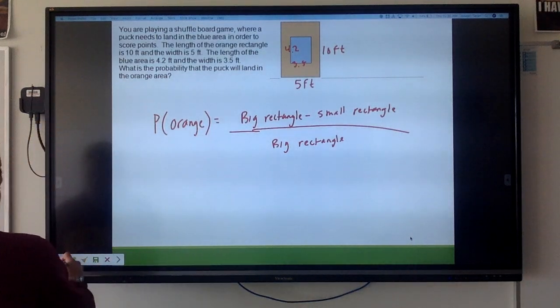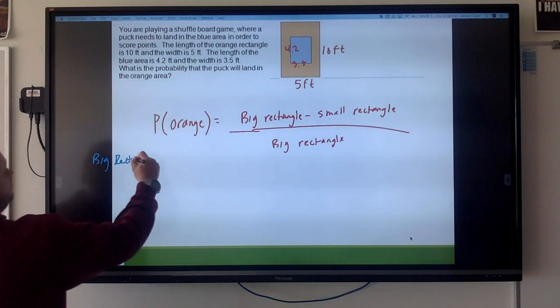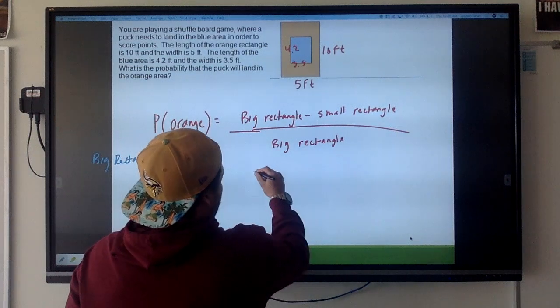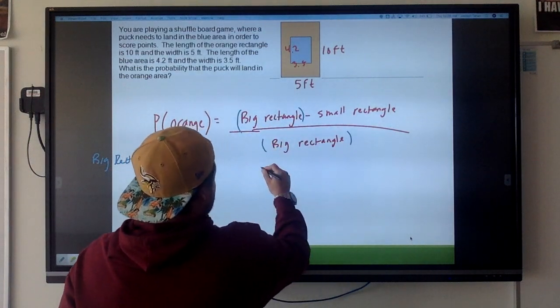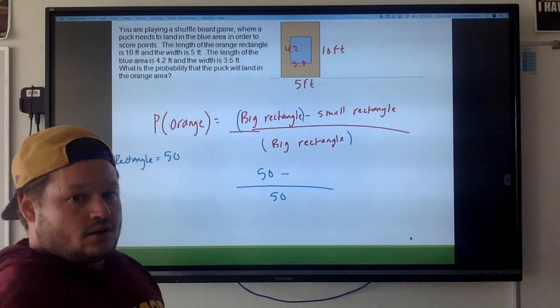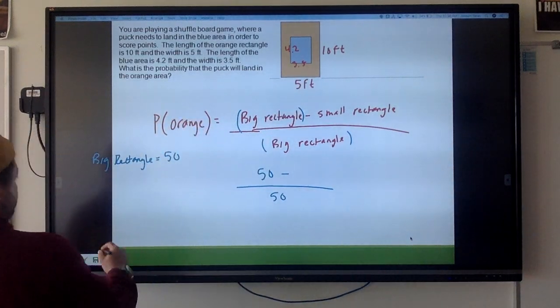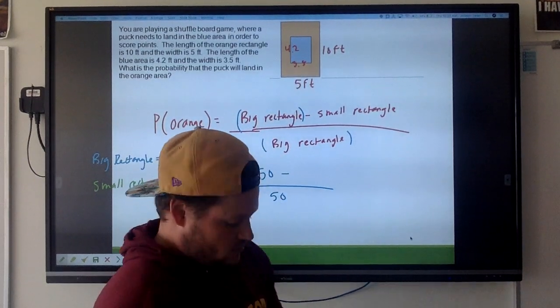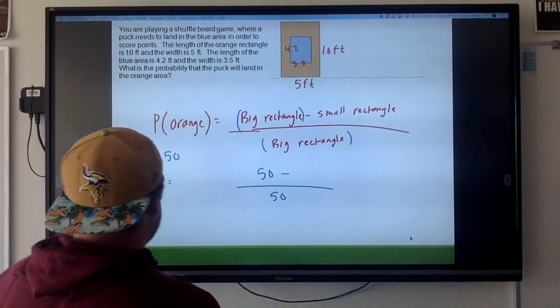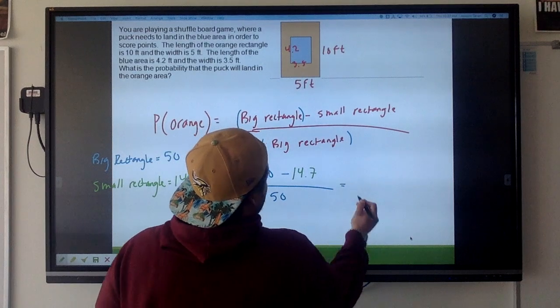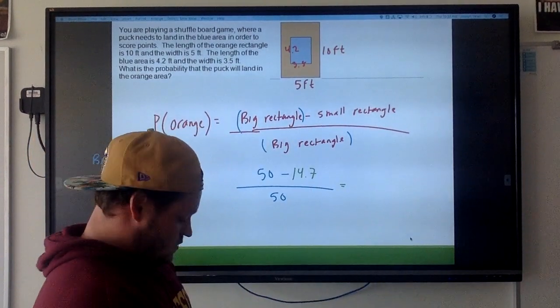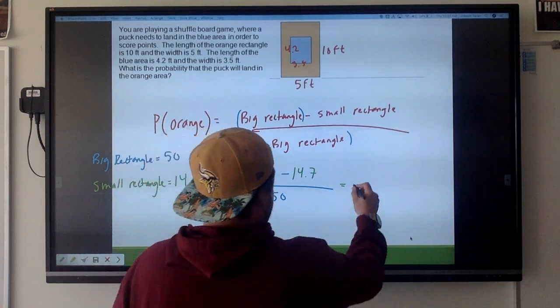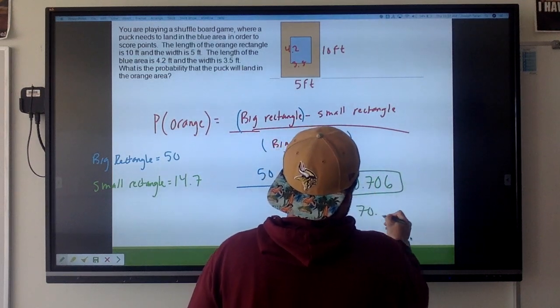So let's do some calculations over here. So the big rectangle has an area of base times height, or length times width, so 5 times 10 is 50. So I'm going to go ahead and substitute it right here and here, so 50 minus something over 50. Now I need to find the area of the small rectangle, and that's just going to be 3.5 times 4.2, which is 14.7. From this point you just need to do this in your calculator, and I'm getting 0.706, or you can say 70.6 percent chance.